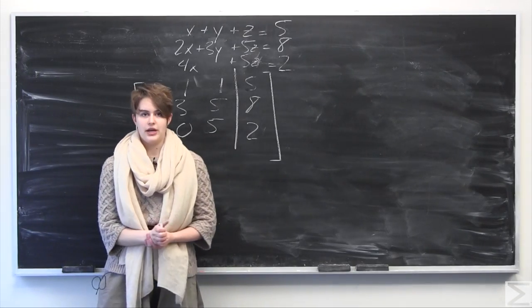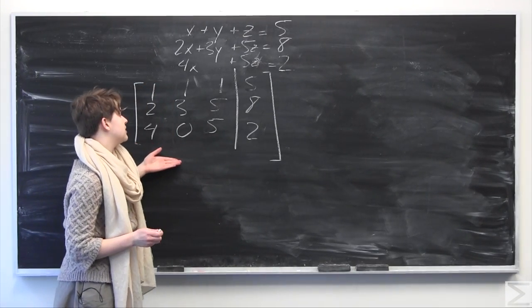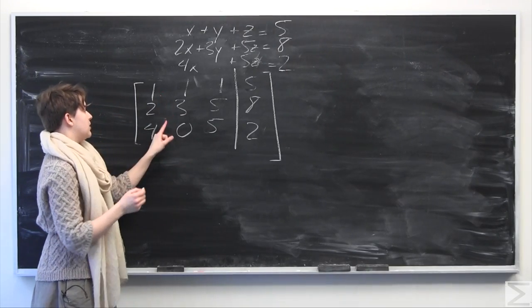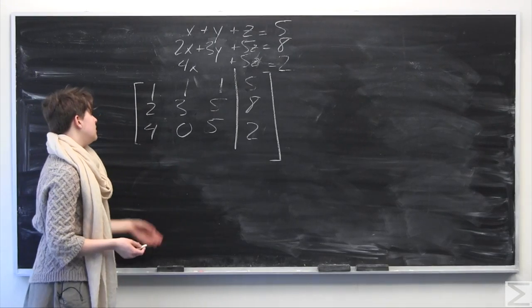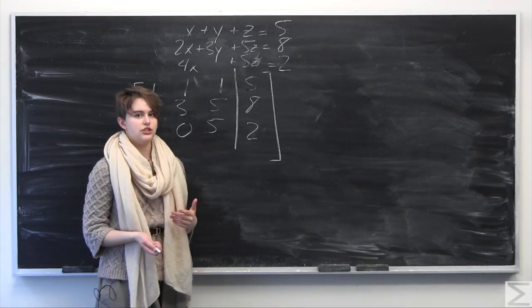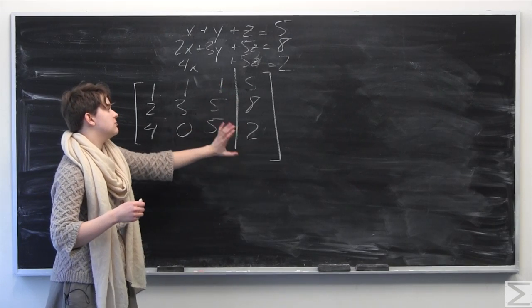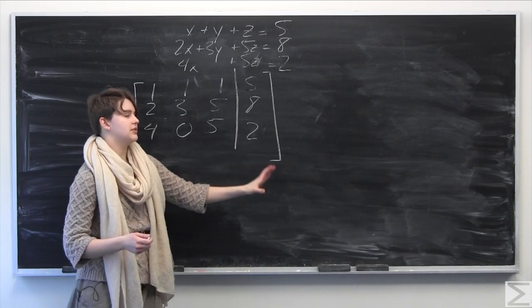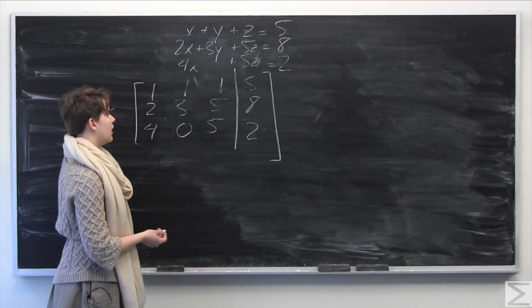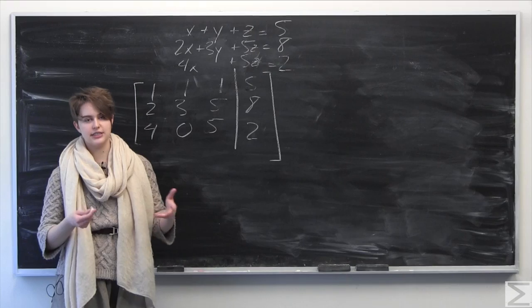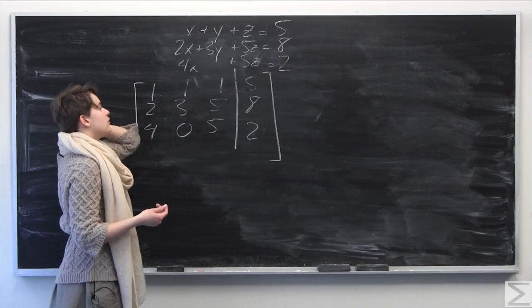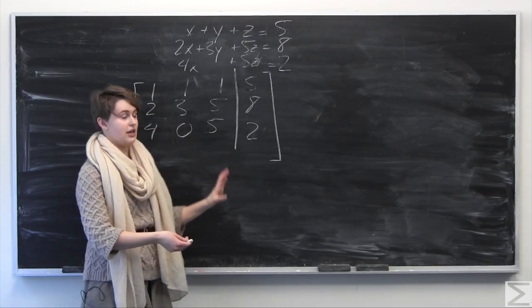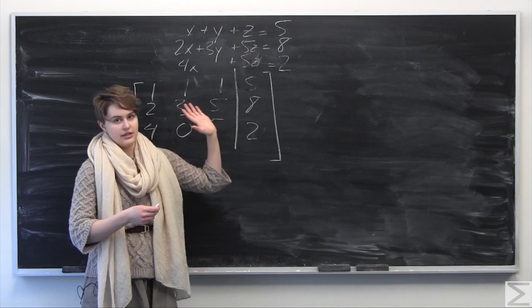The first step when using Gauss-Jordan elimination to put this in reduced row echelon form is we're going to try to get the leading one in the first column, the leading one in the second column, and the leading one in the third column. We can do this using elementary row operations: you can switch any two rows around, you can multiply by scalars, and you can replace a row with a scalar multiple of itself or another row added to itself. It sounds complicated, but it's very simple once you understand what's going on.